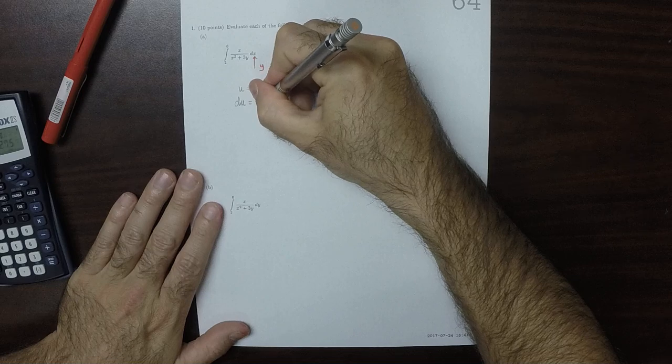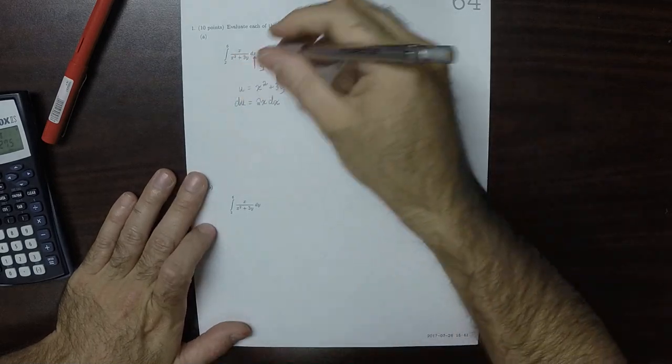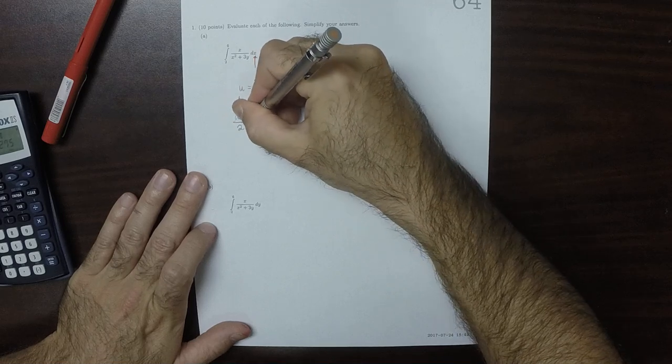du is then 2x dx, because 3y differentiated to 0. So du over 2 is x dx.